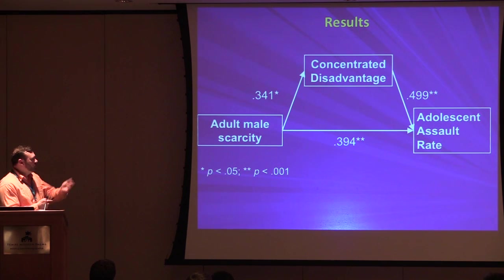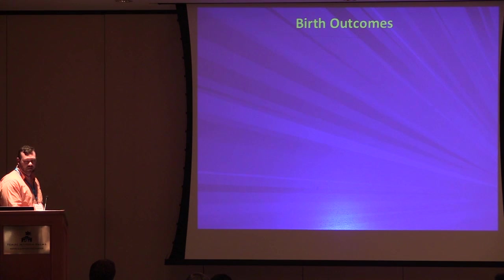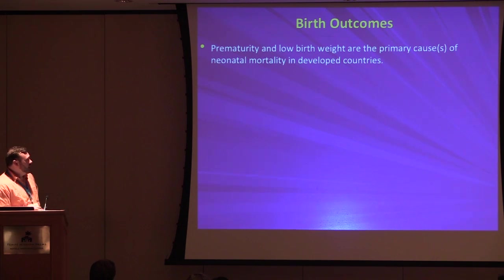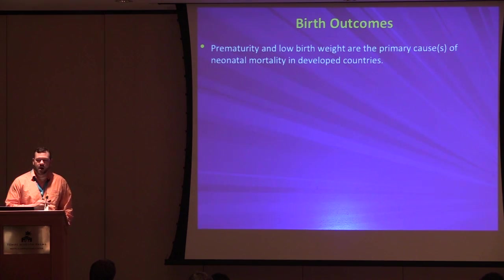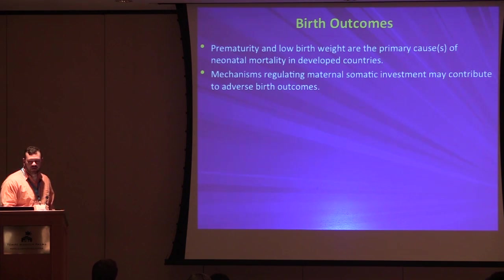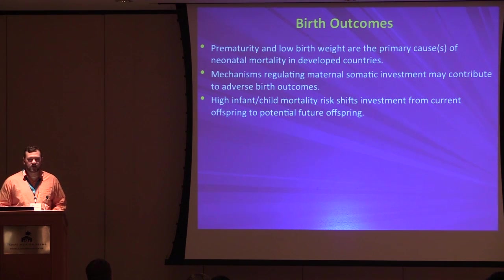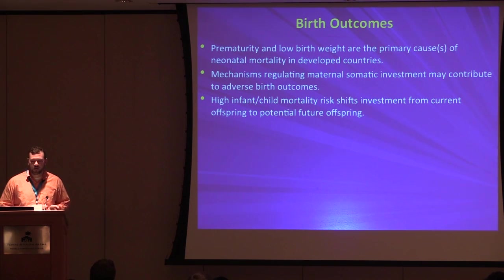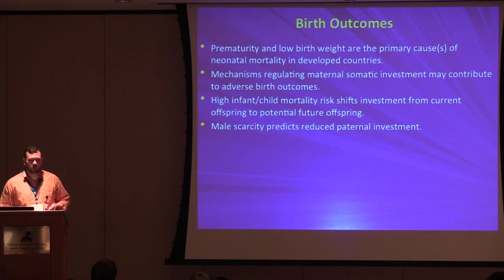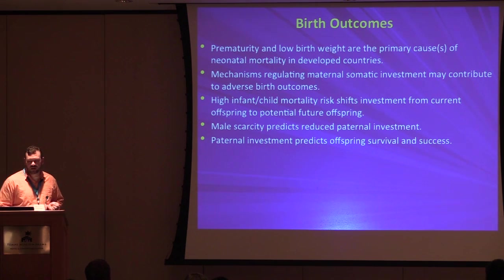Turning now to birth outcomes: prematurity and low birth weight are the primary causes of infant mortality in developed countries, and mechanisms regulating maternal somatic investment may contribute to these adverse outcomes. High infant and child mortality — reflecting extrinsic mortality risk — shifts investment from current offspring to potential future offspring. We know that male scarcity predicts reduced paternal investment, and paternal investment predicts offspring survival and success.